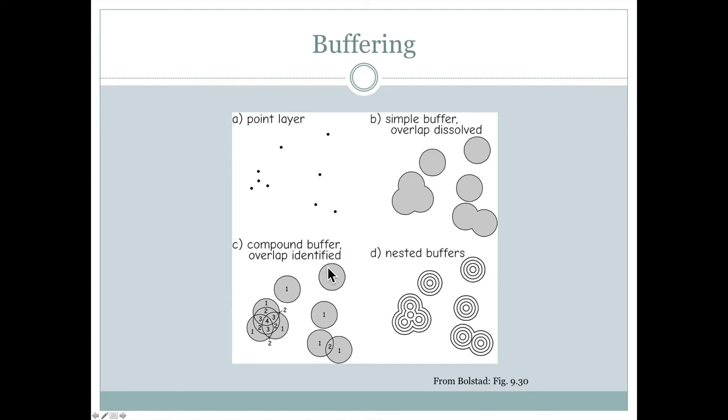However, we could, and this is what we're basically doing, is doing buffering and then dissolving all of the output buffers in order to make nice, continuous areas here. We don't have to do that though, we could identify all the overlaps.